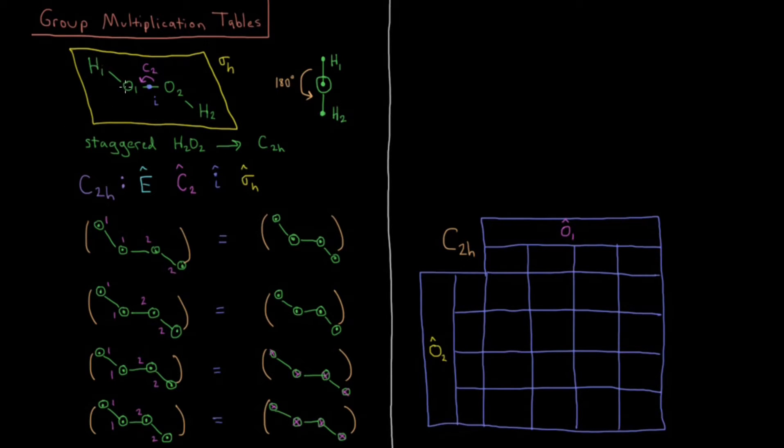The molecule I have here is hydrogen peroxide, H2O2. It is in the staggered configuration, so there is a 180 degree torsion angle here, between HOOH. So that's my molecule.